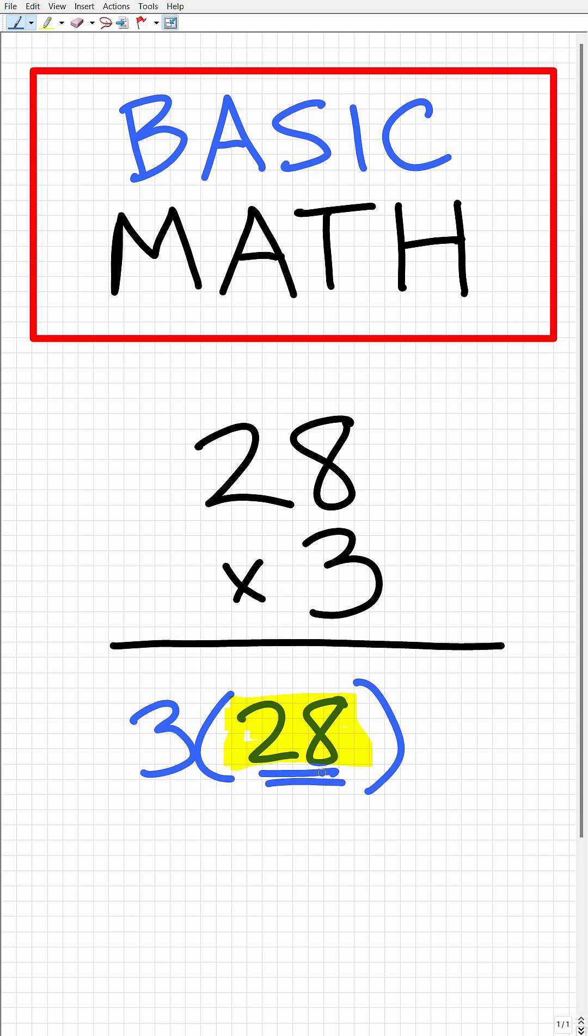In other words, we can break it up in all different sorts of ways. I'm going to take 28 and think of it as 20 plus eight. Okay, so we have three times 20 plus eight, which is the same thing as 28.